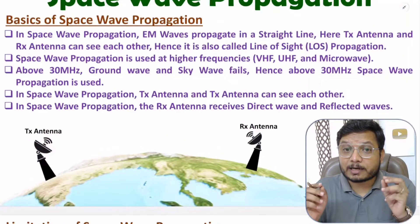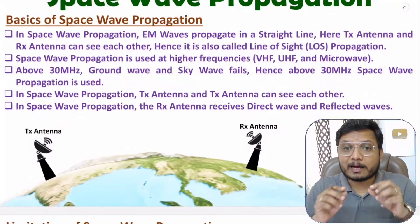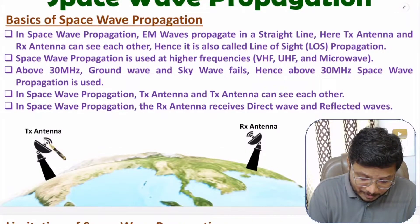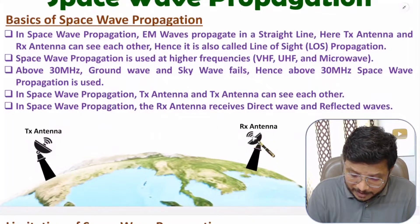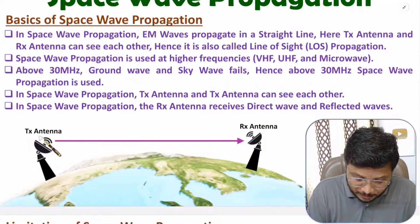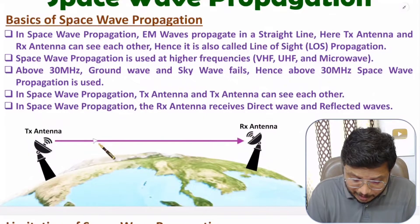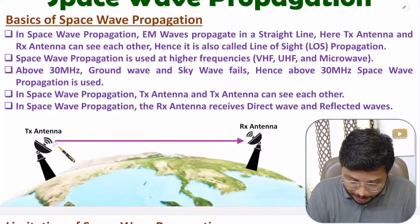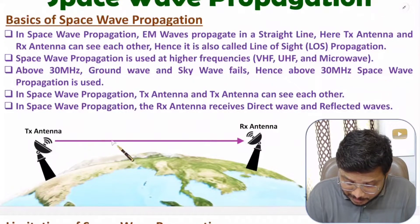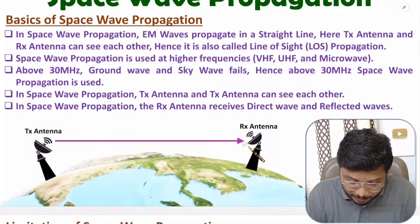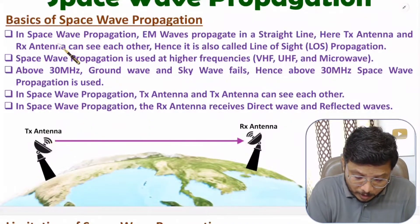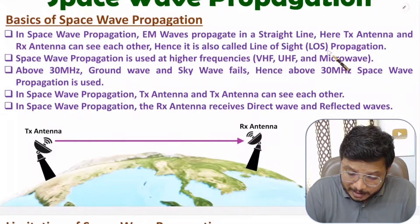In space wave propagation, the transmitting and receiving antenna communicate via a straight line. Electromagnetic waves propagate in a straight line, and that is possible only if the transmitting antenna can see the receiving antenna. That's why space wave propagation is also known as line of sight propagation.